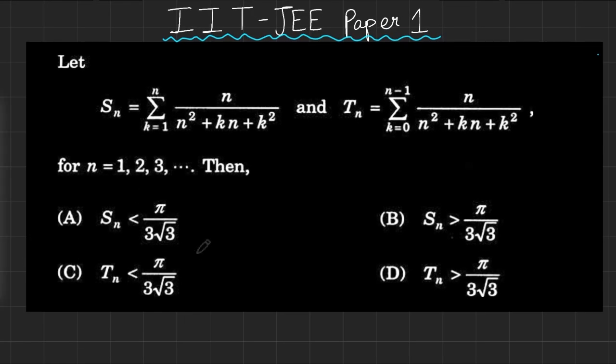Now that I hope you've given the problem a try, here's how to do it. The problem says, let S_n be this summation from k equals 1 to n of n over n² plus kn plus k². And let T_n be the same expression but starting from k equals 0 all the way up to n minus 1.